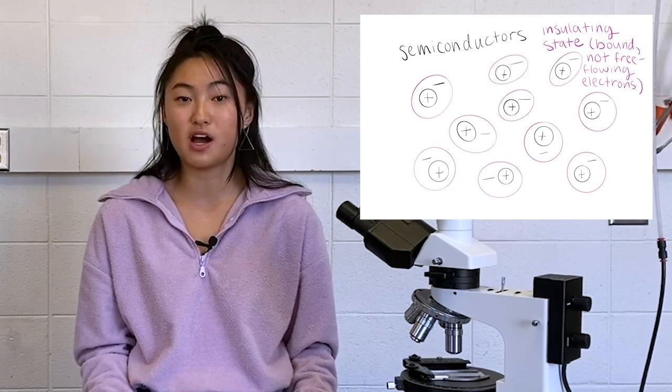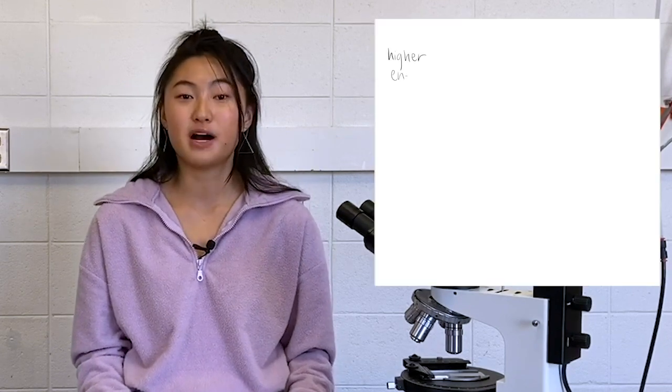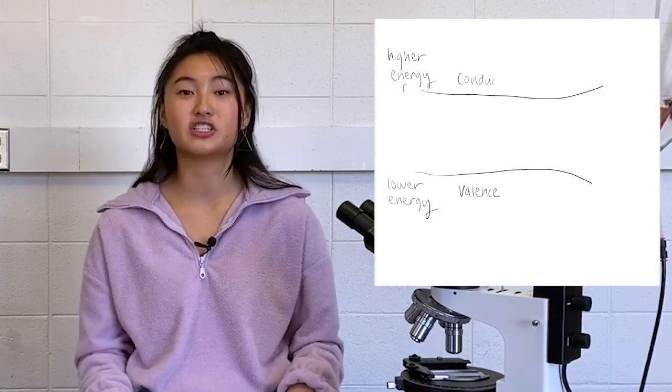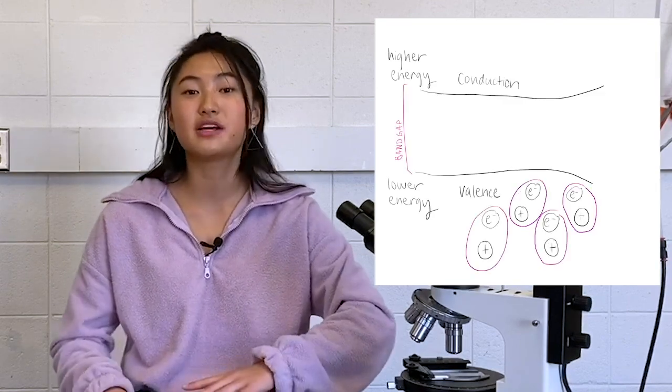This property to switch between non-conducting and conducting or off and on is what makes them so critical in the use of electronics. Electrons have two possible energy states, valence and conduction. They're normally in the valence state so they are bound to one nucleus.